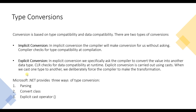In implicit conversion, the compiler makes the conversion for us without asking — the compiler checks for type compatibility at compilation time. In explicit conversion, we specifically ask the compiler to convert the value into another data type; CLR checks for data compatibility at runtime. Explicit conversion is carried out using the cast operator. Microsoft .NET provides three ways of type conversion: using parsing, convert classes, and explicit cast operators.